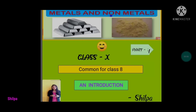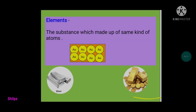In this video we are going to start metals and non-metals. We are all surrounded by a lot of substances. Every substance has its own characteristics. Based on the characteristics, there are some substances which are made up of the same kind of atoms. Now the question comes: what is an atom? An atom is the smallest particle, or you may say it is the basic unit of any matter that we have.